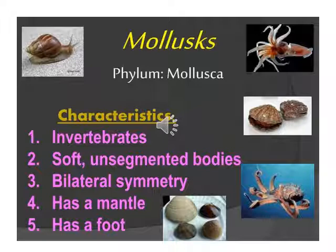Molluscs have unsegmented bodies — unlike Phylum Arthropoda, you cannot distinguish a head, thorax, or abdomen. Their body is bilaterally symmetrical — the same on both left and right sides. They have a mantle, which is a tissue layer, and a foot for movement and locomotion. Examples are snails, slugs, and octopus.